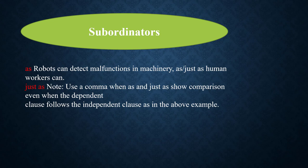Contrast signal words fall into two main groups according to their meaning. The words in the first group show a relationship called concession. The words in the second group show an opposition relationship. Concession signal words indicate that the information in one clause is not the result you would expect from the information given in the other clause.